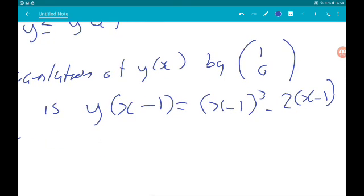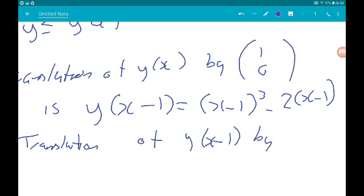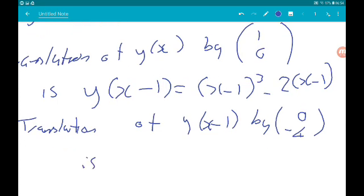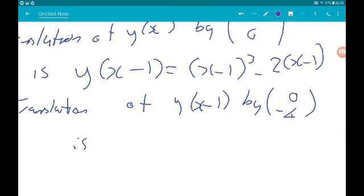And then, translation of y of x minus 1 by (0, -4), so that's moving it four places down. Remember, y translations are really nice, they do exactly what you would think they should do. So this is going to be x minus 1 cubed minus 2 lots of x minus 1 and then minus 4 on the end.